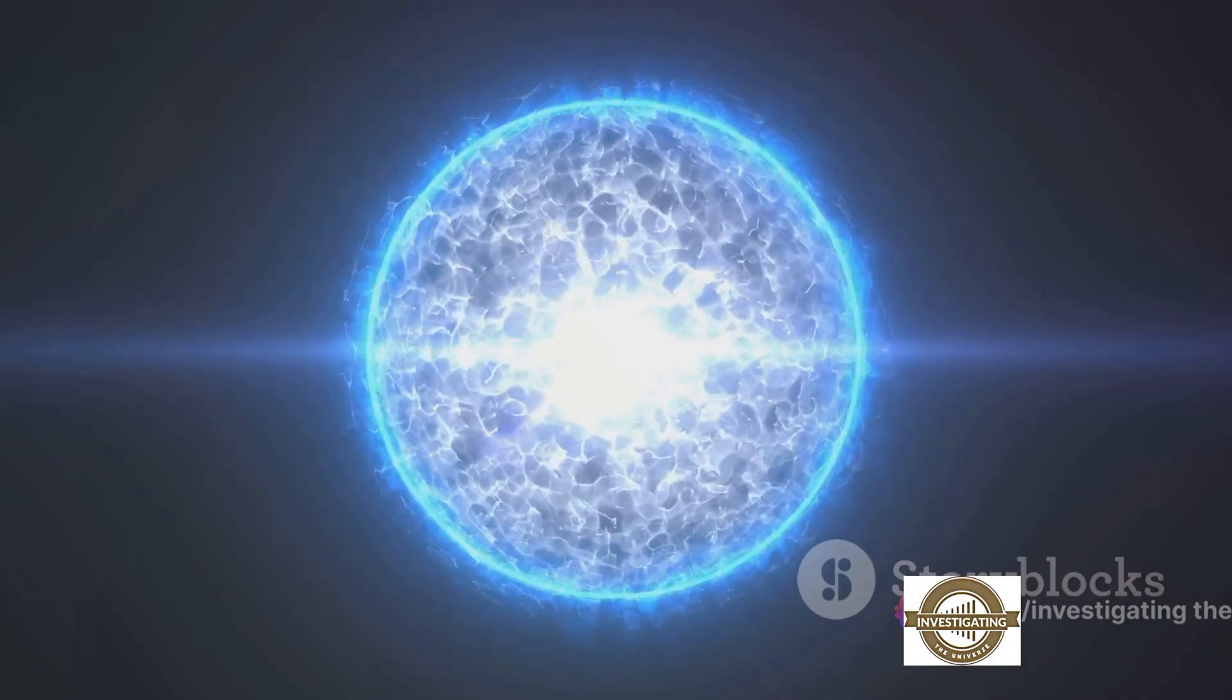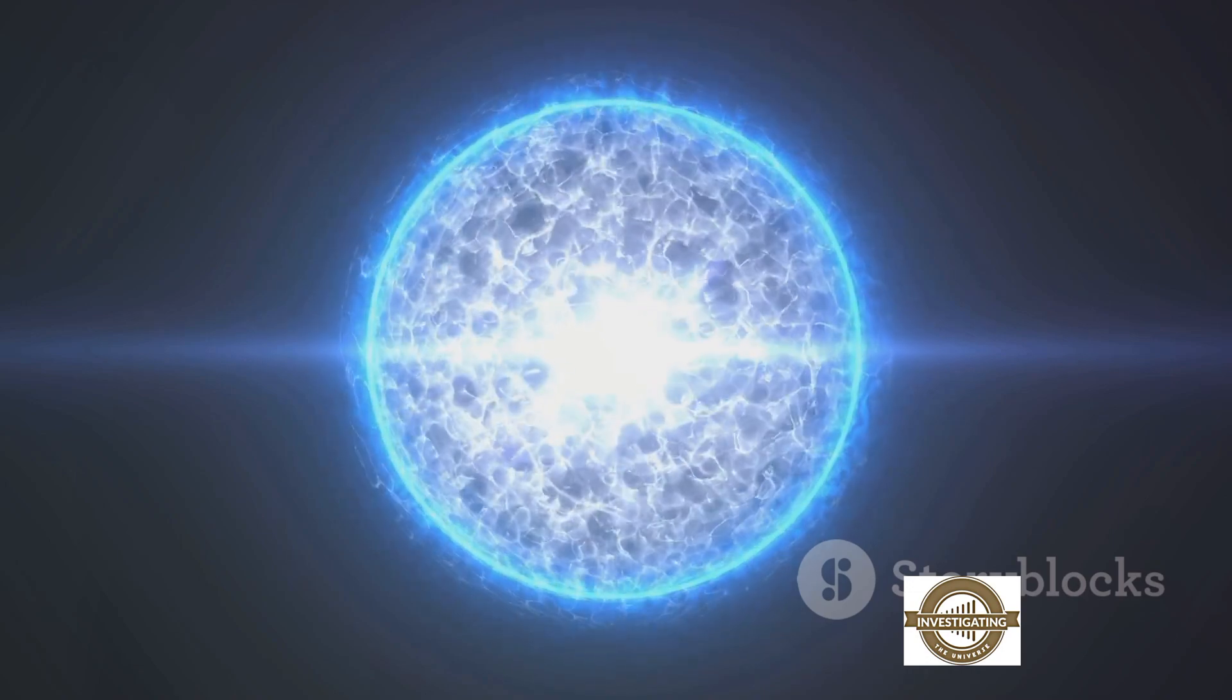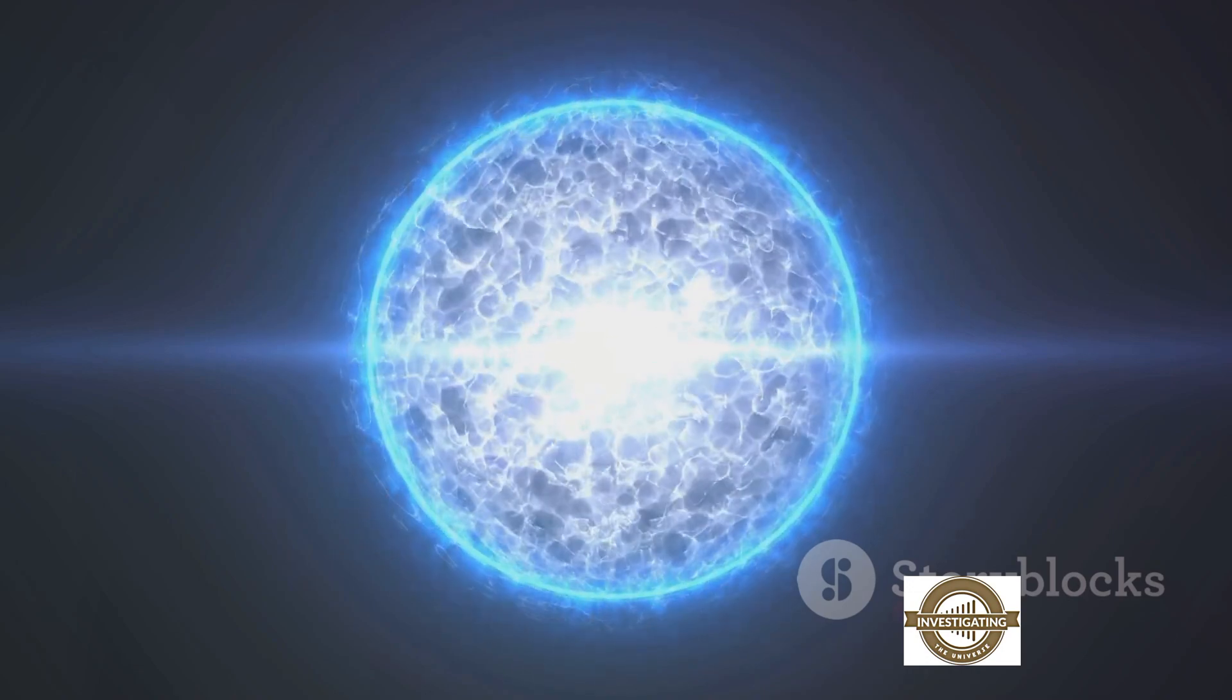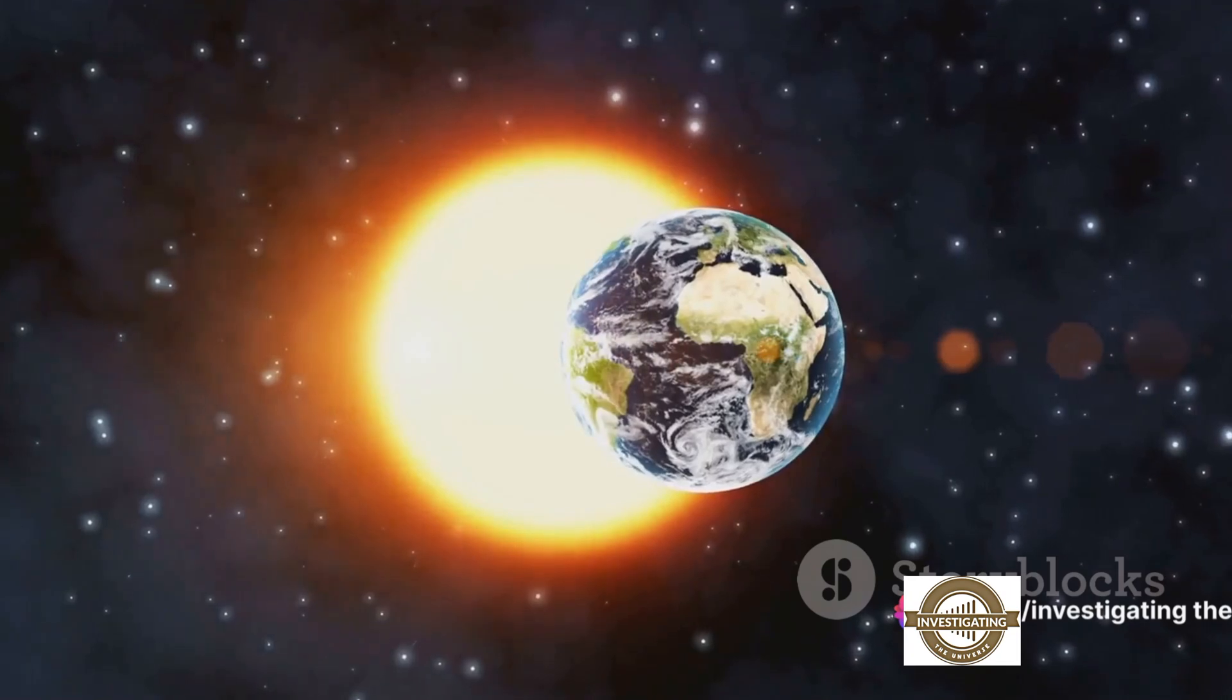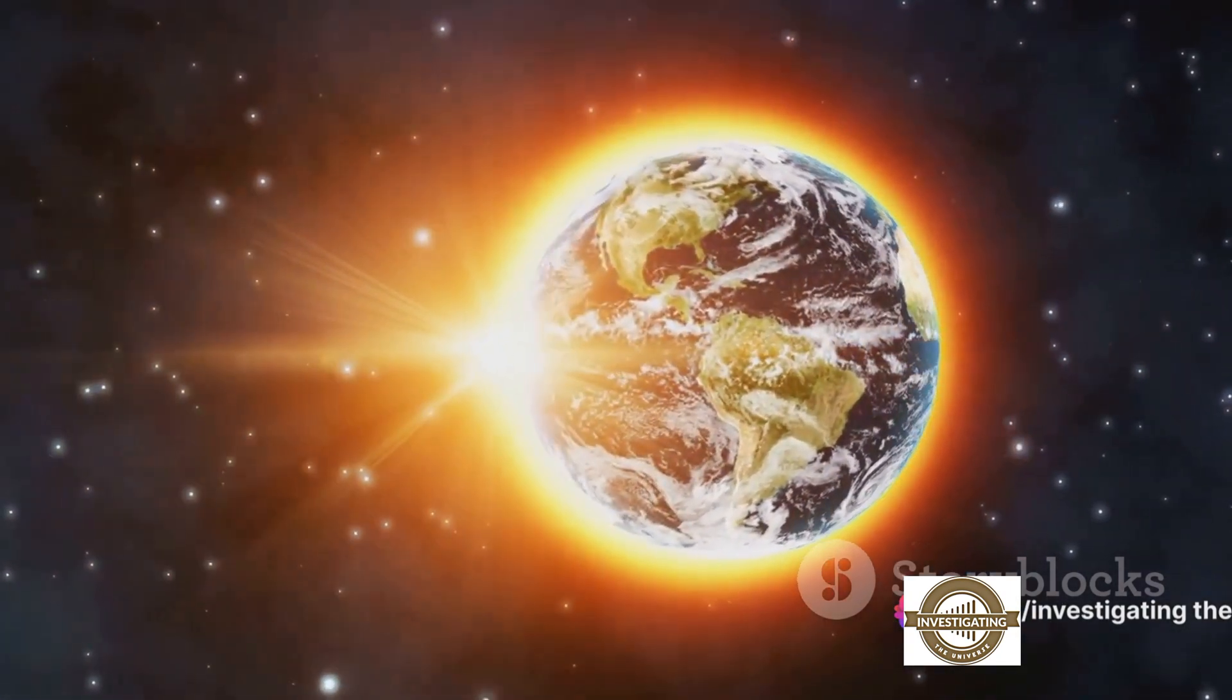Imagine a celestial object so luminous that it can pierce the vast expanse of space to twinkle in our night sky. Recently, Betelgeuse made headlines when the asteroid Leona passed directly in front of it, resulting in a rare and unique eclipse.